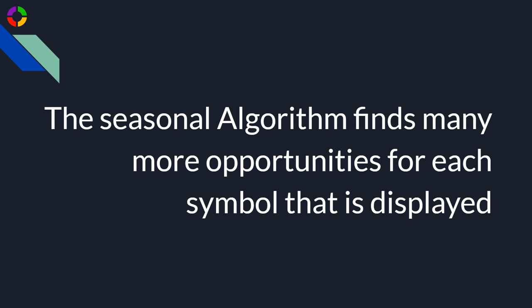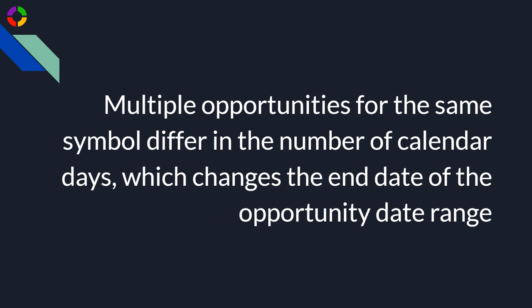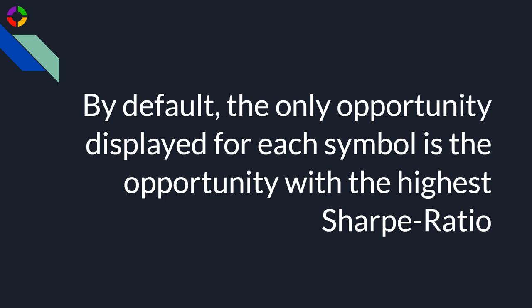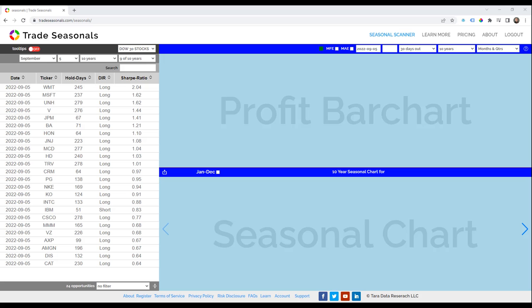The seasonal algorithm finds many more opportunities for each symbol that is displayed. Multiple opportunities for the same symbol differ in the number of calendar days, which changes the end date of the opportunity date range. By default, the only opportunity displayed for each symbol is the opportunity with the highest Sharpe ratio.